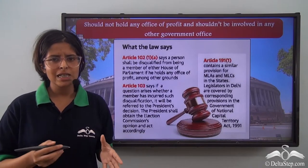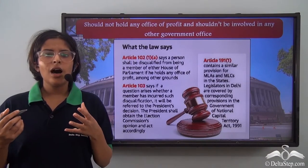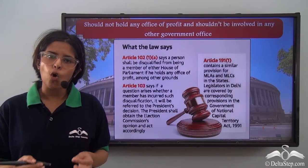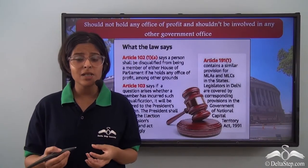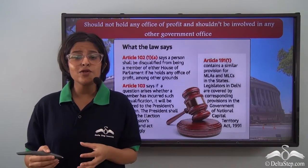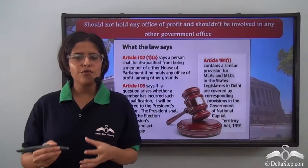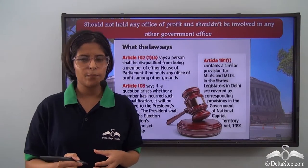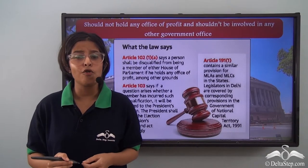An office of profit is a position that brings a person some financial gain. A member of Lok Sabha cannot hold an office of profit under the government of India or any state. This is done to ensure that confidential information is protected and that the MP cannot influence decisions or bills passed through the Lok Sabha. Let's see a case regarding this where Sonia Gandhi had to resign because of holding an office of profit.